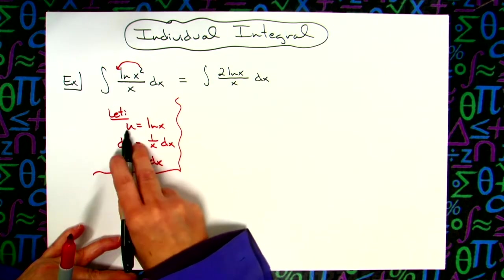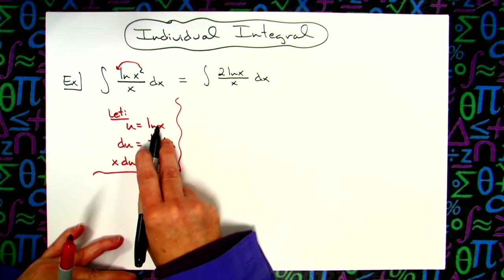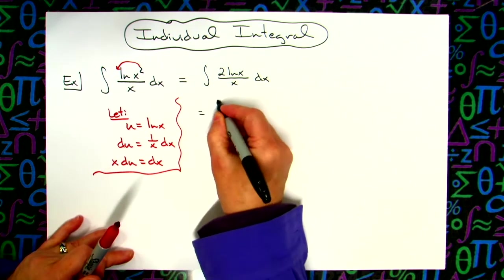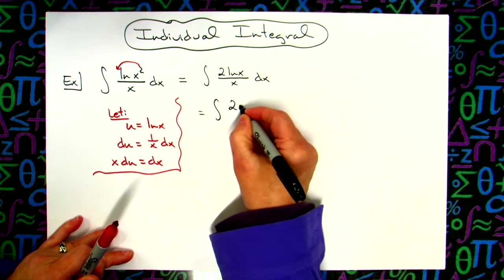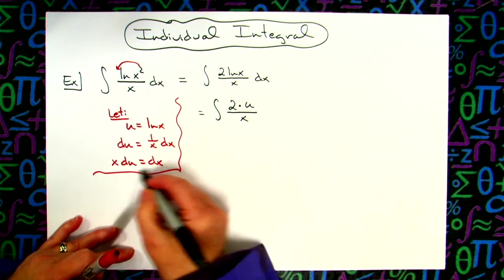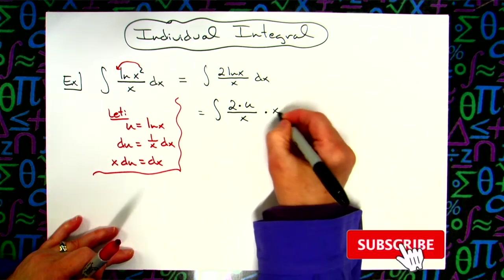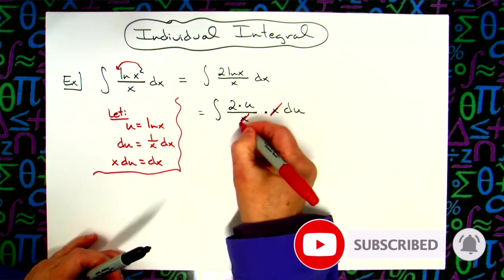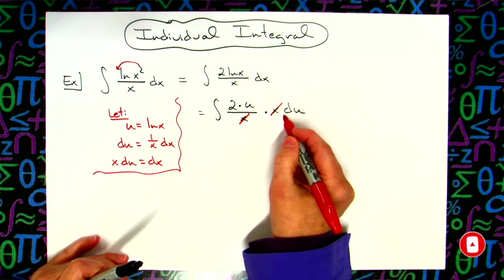Now I can easily substitute in my u for that natural log of x. So then I'll have the integral of 2 times our u all over x and then replacing that dx will have x du. The x is now we're going to cross out really nice. I'll have everything in terms of u.